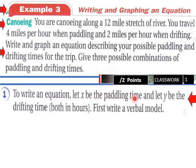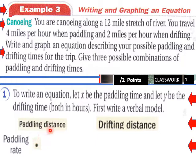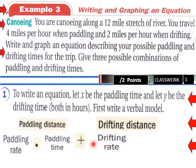Let x be the paddling time and let y be the drifting time, both in hours. First, write a verbal model. We have paddling distance and drifting distance — two kinds of distances. Our paddling rate is four miles per hour, so we have paddling rate times paddling time. Then plus we have drifting rate, which is two miles per hour when drifting, times drifting time.